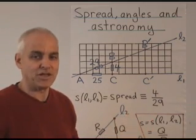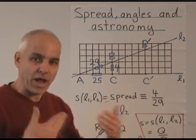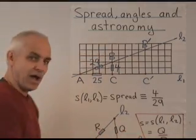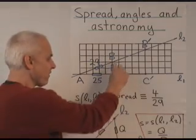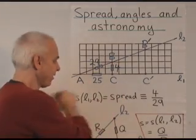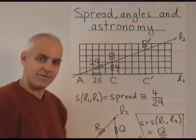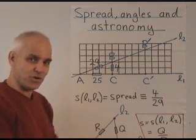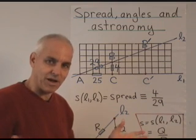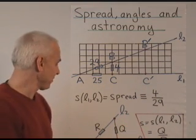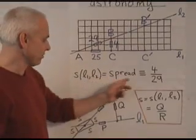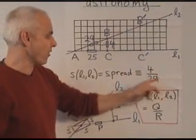The solution is to work with quadrance, the square of the distance instead. So what we do is we define the spread between these two lines to be the ratio of the quadrance here to the quadrance here. That turns out to be the natural and good concept that makes trigonometry a lot simpler, although it does take some getting used to. So we define the spread S between L1 and L2 to be, in this case, 4 over 29.